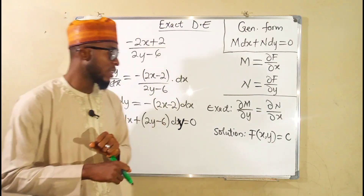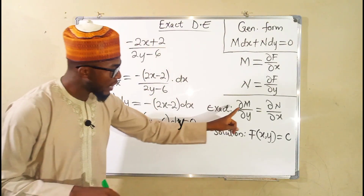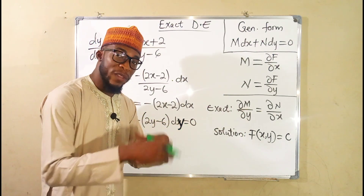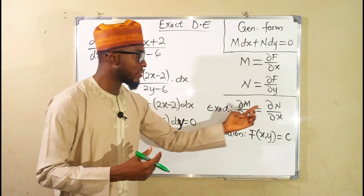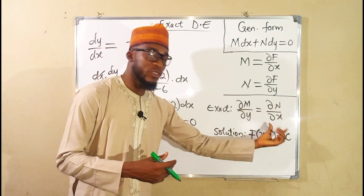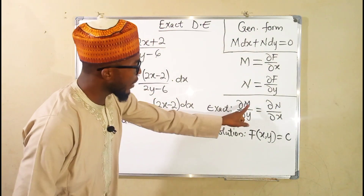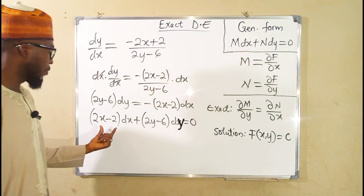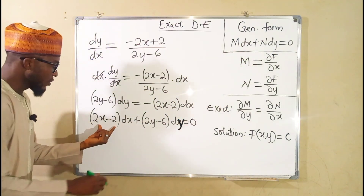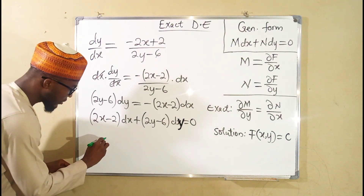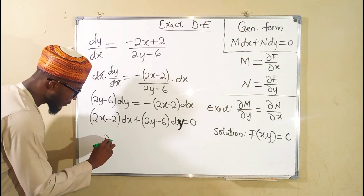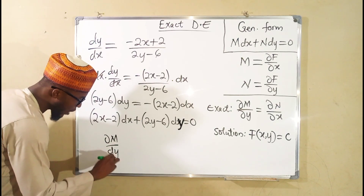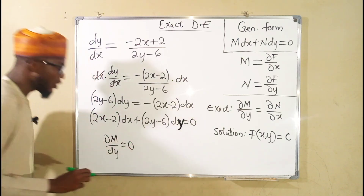All we have to do next is to test whether it is really exact. To find out, we take the partial derivative of M with respect to y and see whether it equals the partial derivative of N with respect to x. Our M is the term connected to dx. The partial derivative of M with respect to y equals zero, because there is no term written in y.